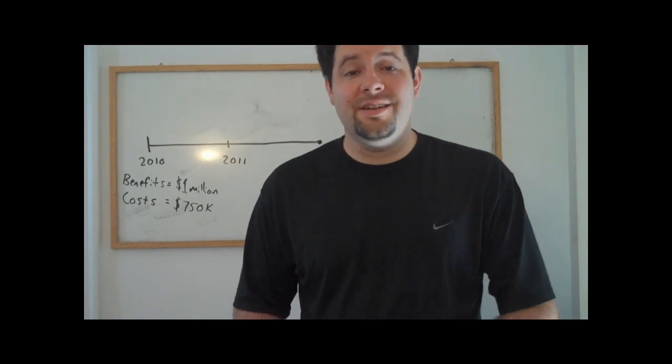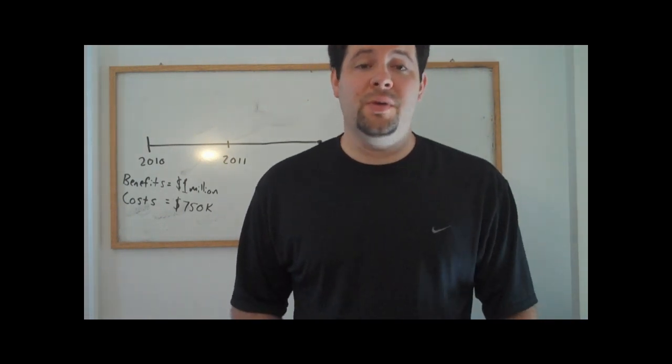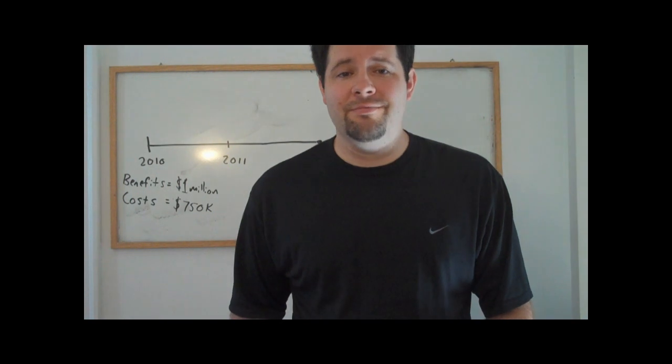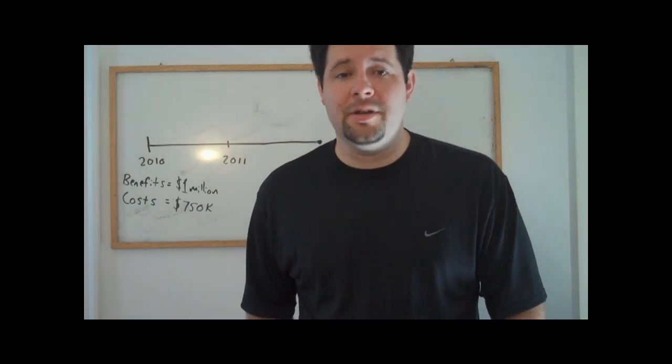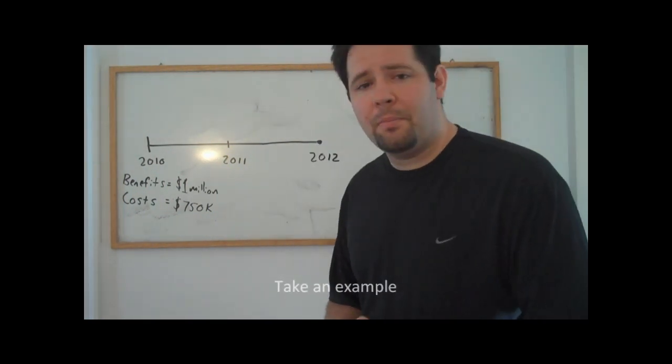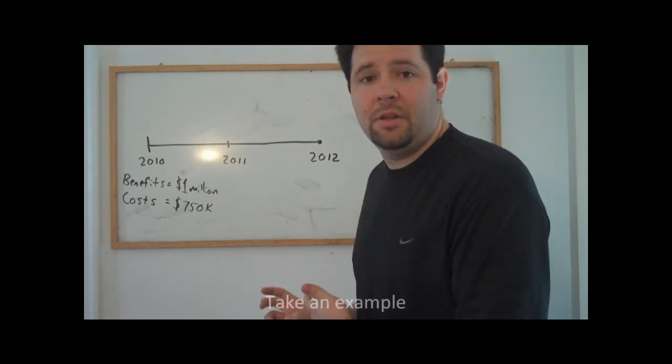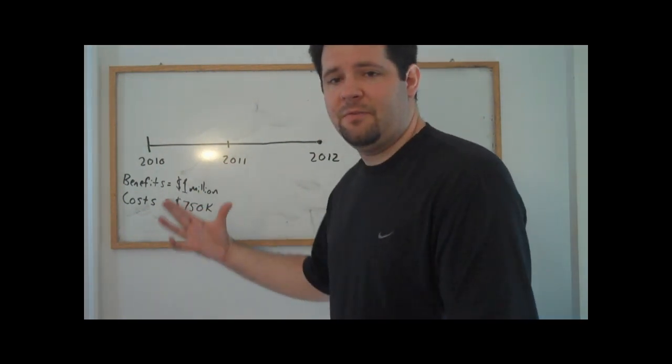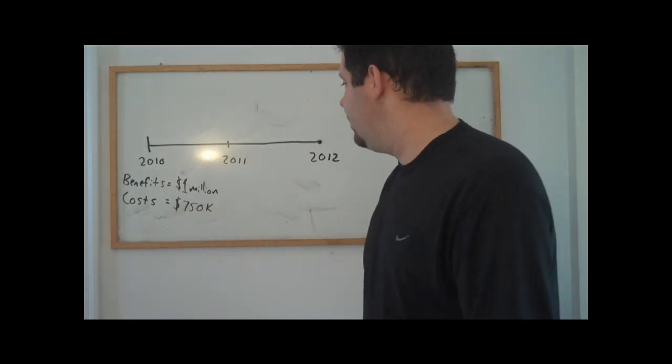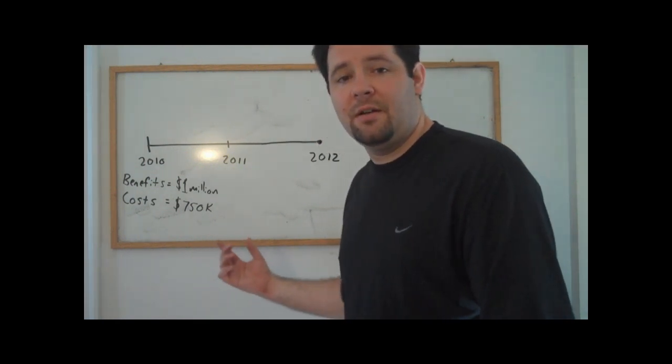A sunk cost is a cost that is unavoidable, and because we cannot avoid that cost, it isn't relevant for economic decision making. Consider a project that takes two years to complete. We estimate the benefits from the project will be $1 million and the cost will be $750,000.